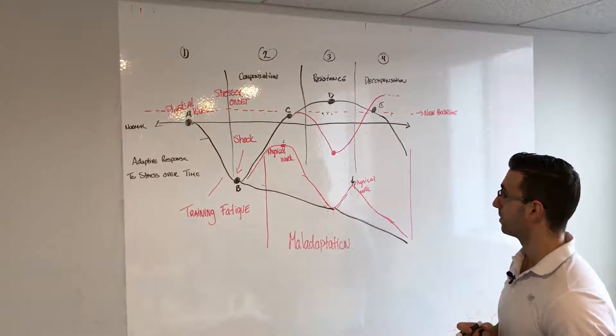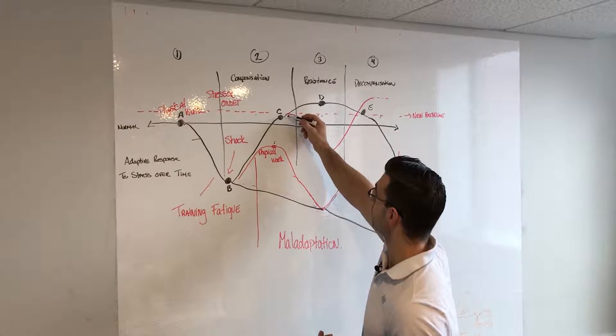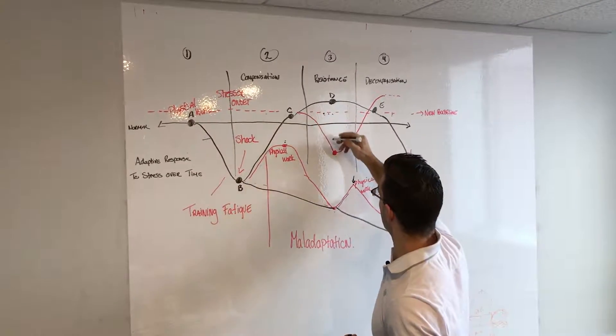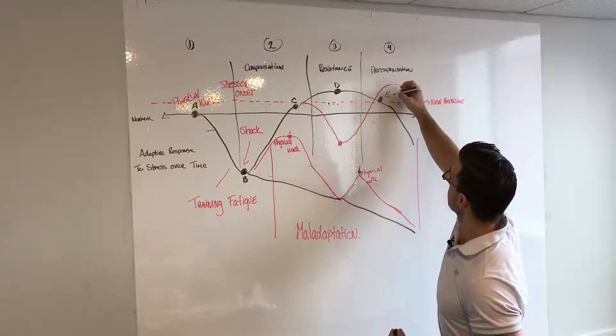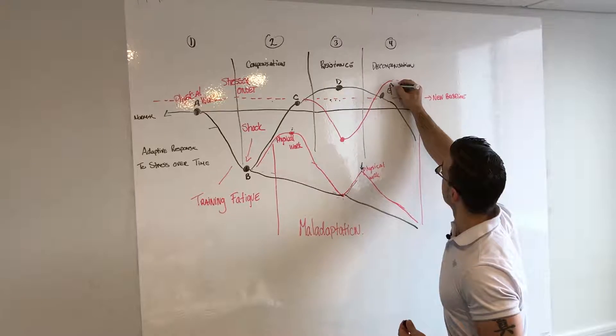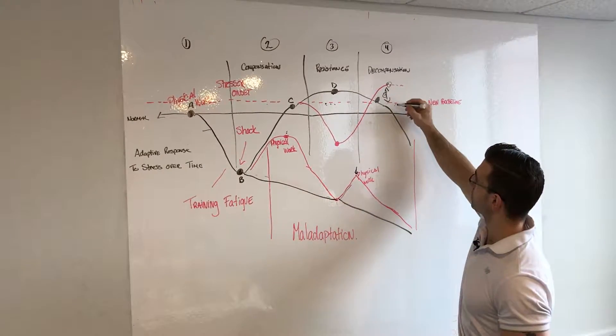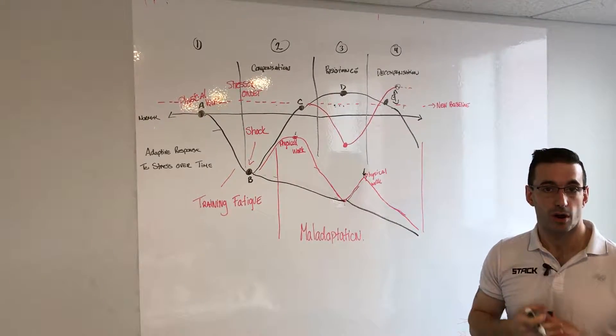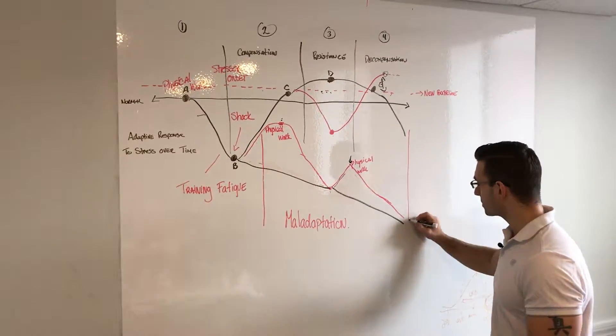Our goal is to get to this super compensated or improvement in performance phase. We go through the resistance phase and ultimately we'd be in a super compensated phase up here, which is above this line. This is where you can see training progress start to happen over longer periods of time.